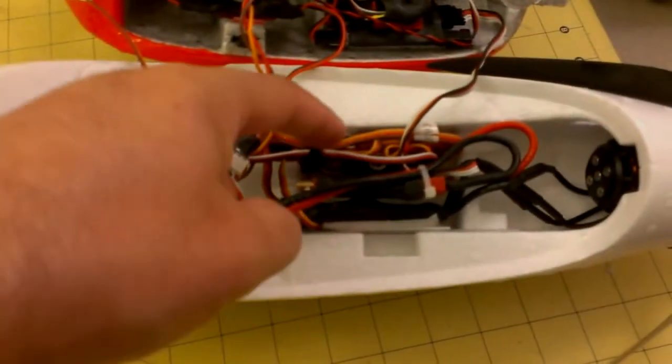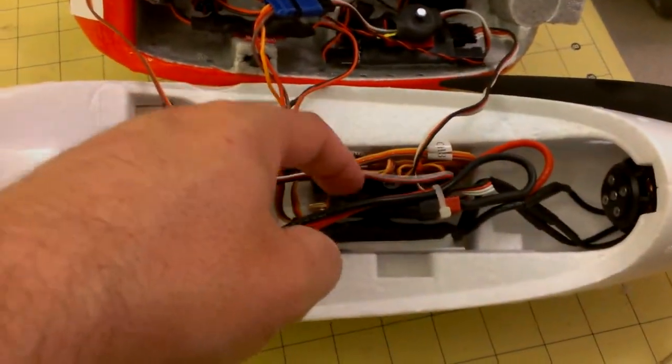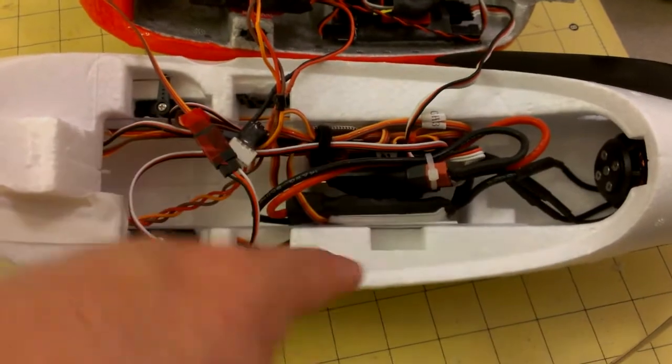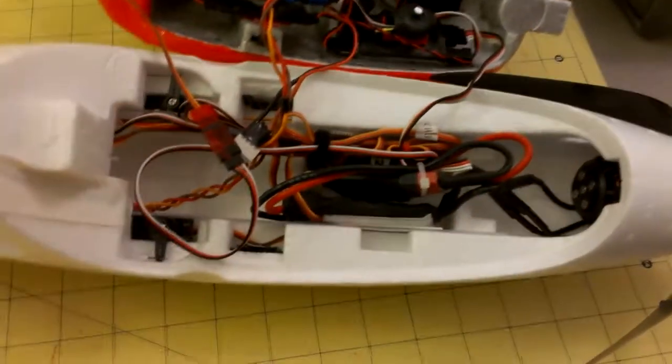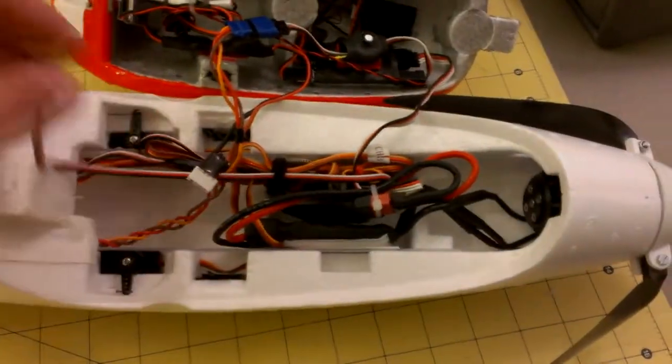Down inside I've got my 72 megahertz receiver, my current sensor, and my speed controller. Obviously the motor's tucked up front. A couple of servos here and a bunch of wires.